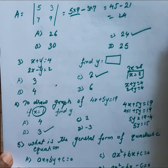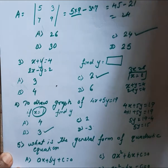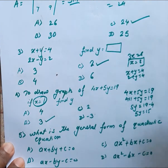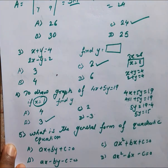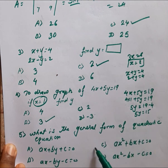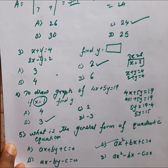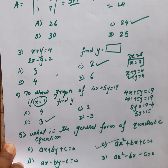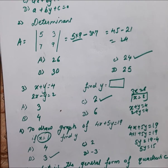Next question: what is the general form of a quadratic equation? The general form of a quadratic equation is AX² + BX + C = 0.